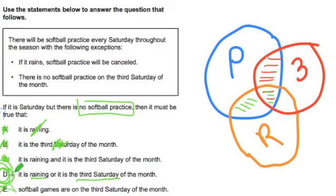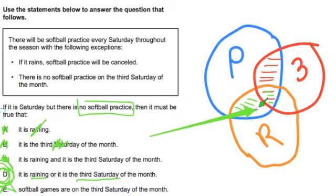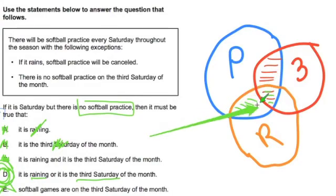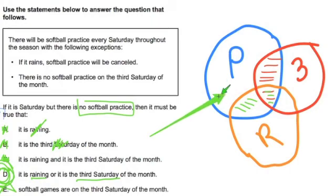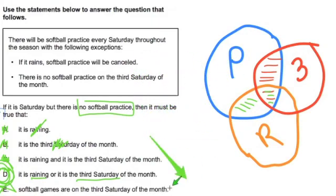So the answer is D. The way I organized the information was I created a Venn diagram that accounted for overlap — overlapping events — and for unique events like just rain or just third Saturdays of the month. This Venn diagram can really help us when we look at more complex problems, but I think it's a good way to think about the problem. For some teachers, it's going to give you that graphic organizer to help think through problems that are set up like this. Hopefully you can use it and it will help you get to answer D.